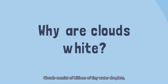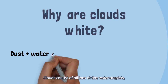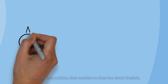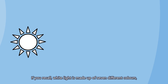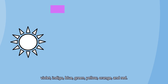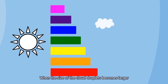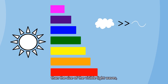Why are clouds white? Clouds consist of billions of tiny water droplets including dust particles that combine to form cloud droplets. White light is made up of seven different colors: violet, indigo, blue, green, yellow, orange, and red. When the size of the cloud droplets becomes larger than the size of the visible light waves,